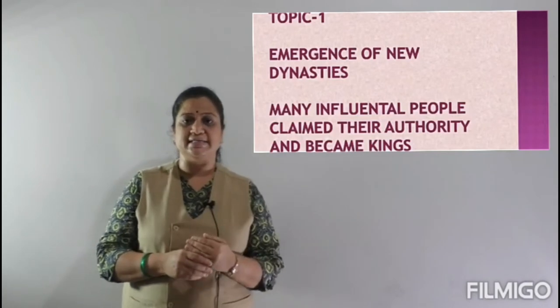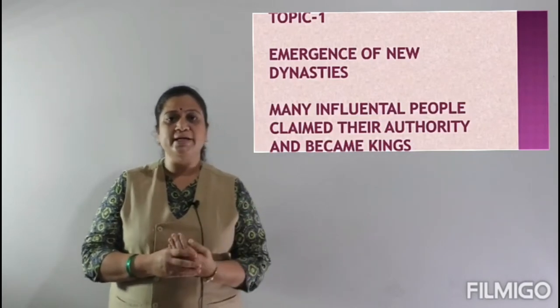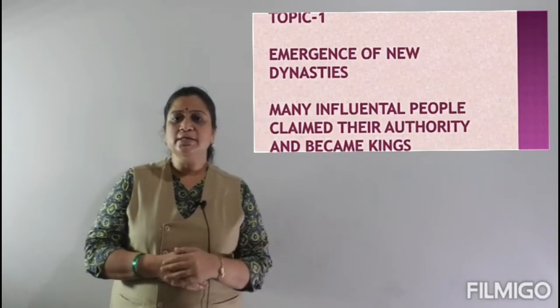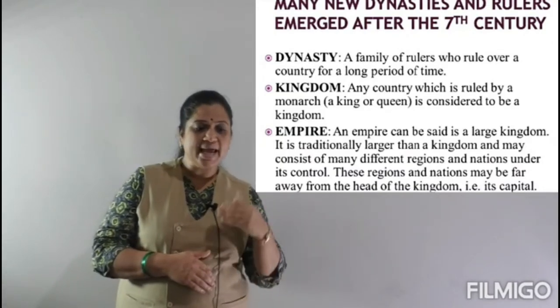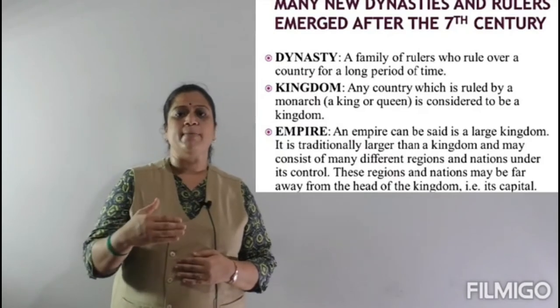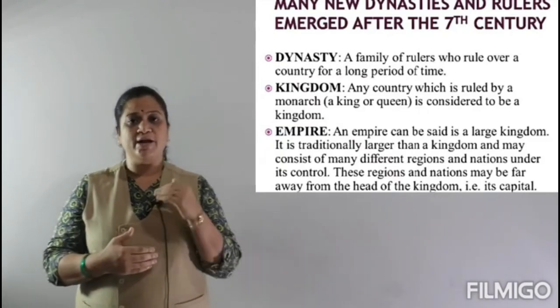The first topic is the emergence of the new dynasties — how these kings came to our subcontinent and how they ruled. The word 'dynasty' means members of the same family ruling over and over. For example, Chandragupta Maurya, then his son Bindusara, then Ashoka — the great ruler who ruled all of North India. This way, members of the same families were ruling the same kingdom.